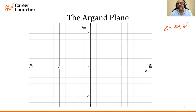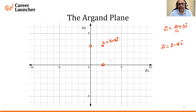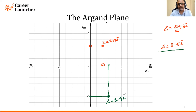If I want to plot z = 2 + 3i, the real part is 2 and the imaginary part is +3, so z is at that point — that is how you plot the number. For another example, z = 3 − 5i: the real part is 3 and the imaginary part is −5 on the y-axis, so the point of intersection gives you z = 3 − 5i.